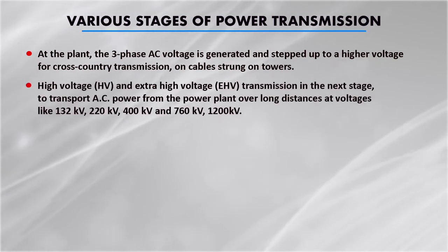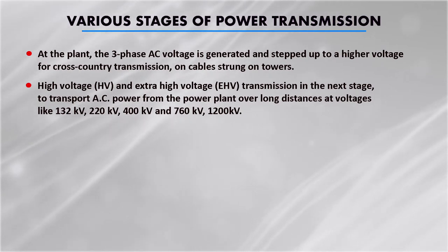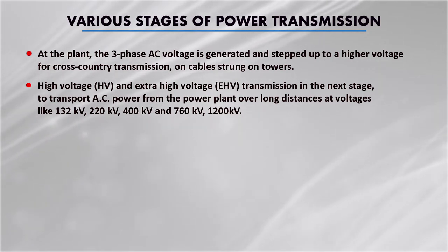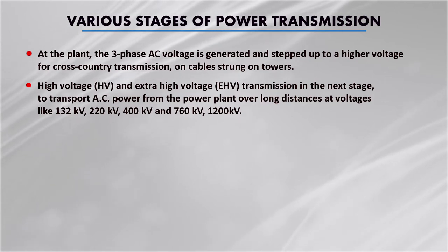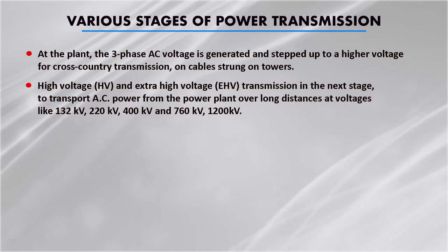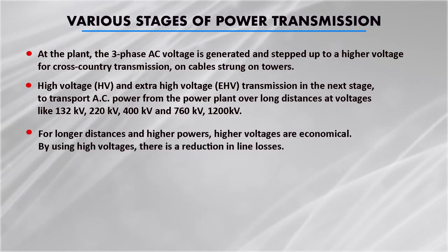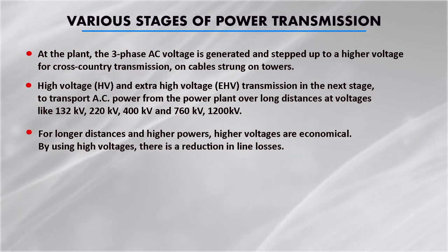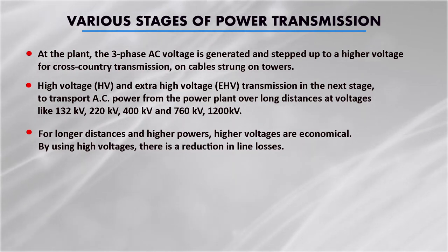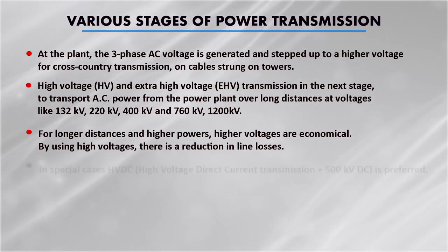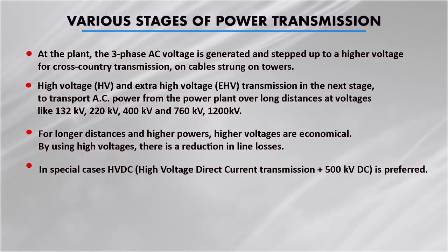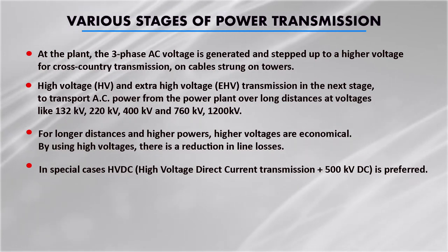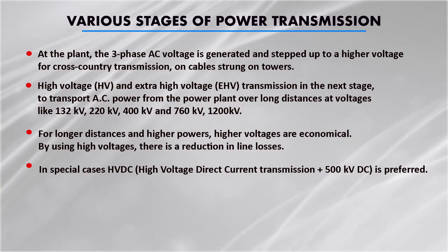High voltage and extra high voltage transmission is used in the next stage to transport AC power from the power plant over long distances at voltages like 132 kV, 220 kV, 400 kV, or 760 kV. For longer distances and higher powers, higher voltages are more economical, and using high voltages reduces line losses. In special cases, high voltage direct current transmission at 500 kV DC is also preferred, but in normal cases high voltage AC transmission is standard.